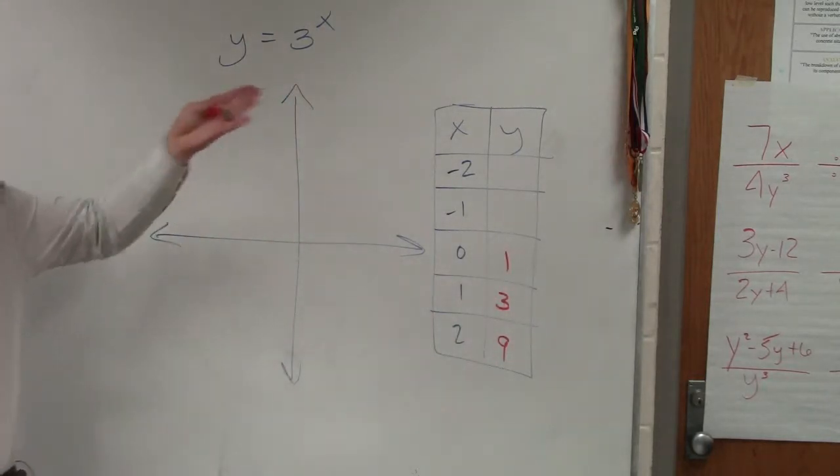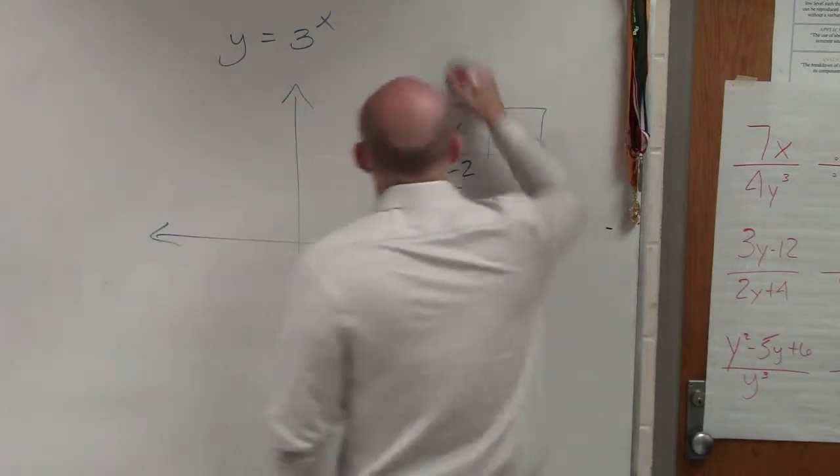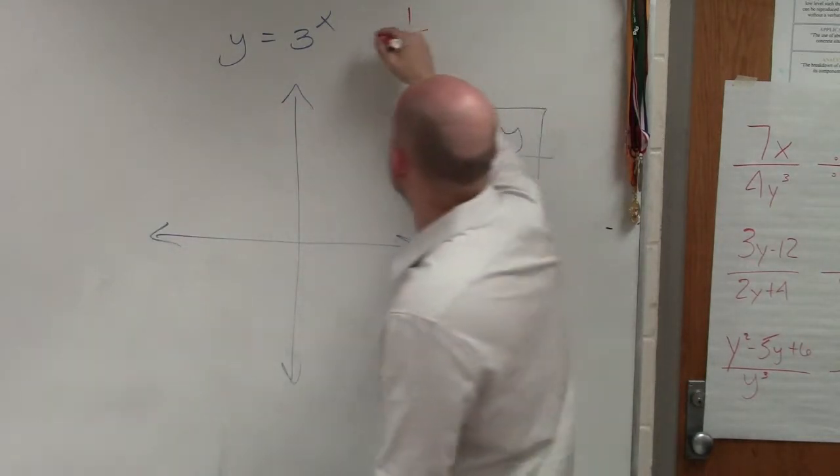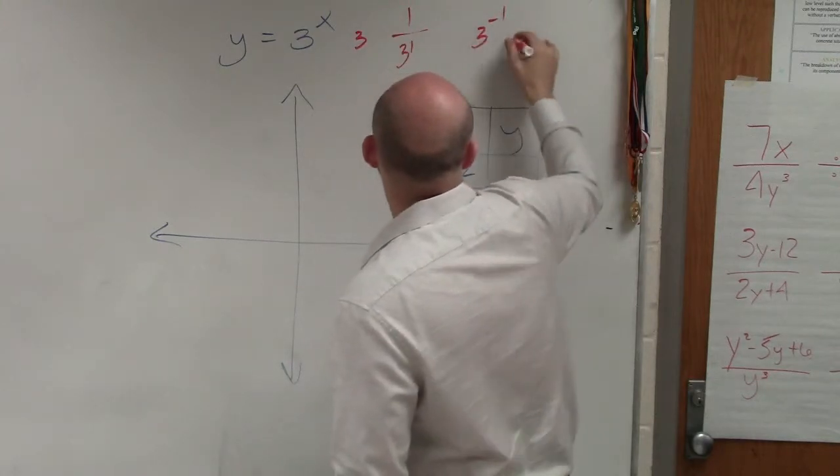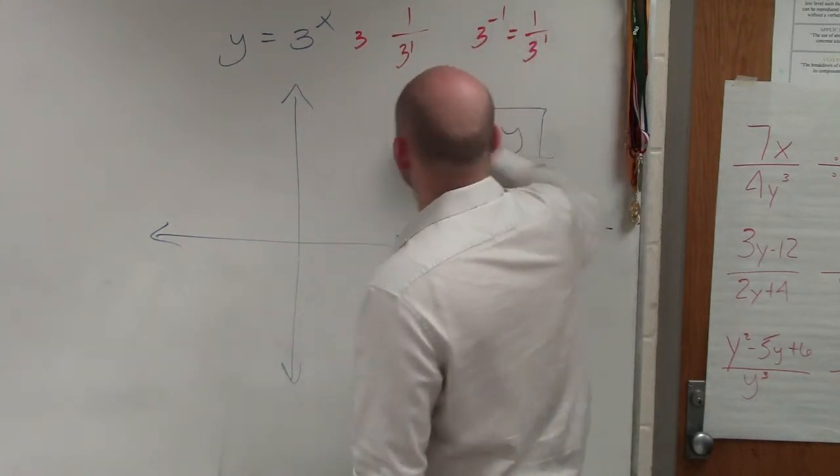Negative 1, 3 to the negative first, is basically the same thing as 1 over 3 to the first. Right? 3 to the negative first is equal to 1 over 3 to the first.